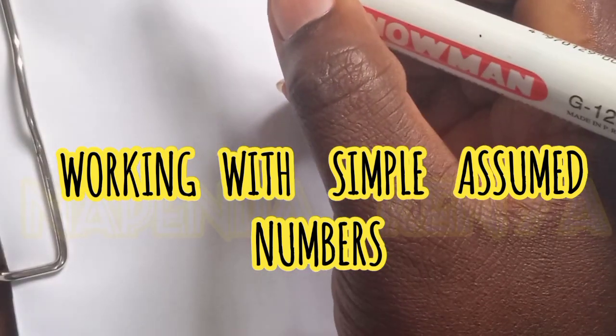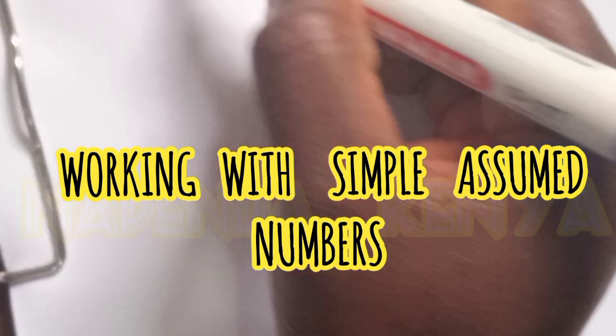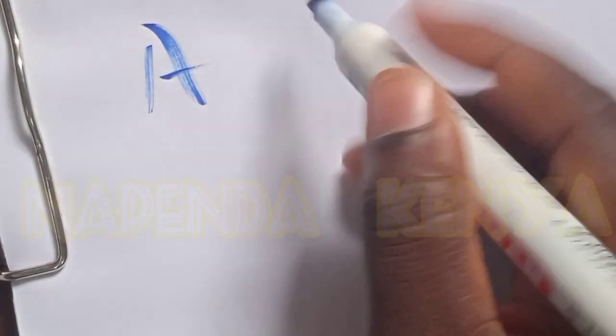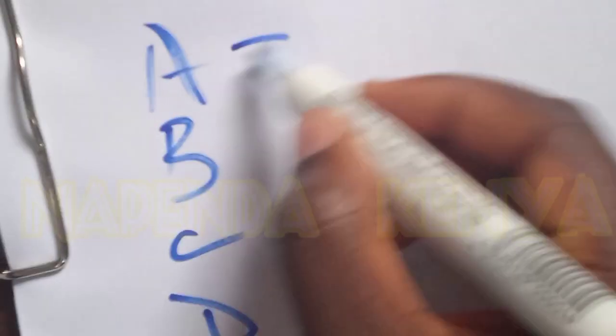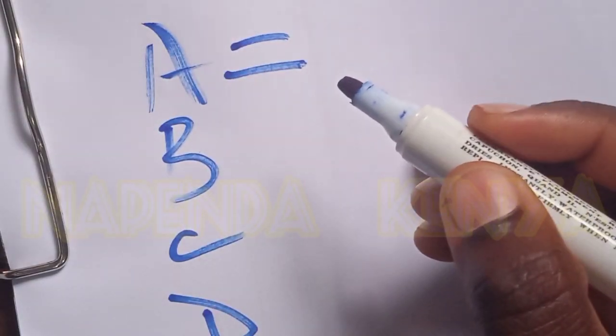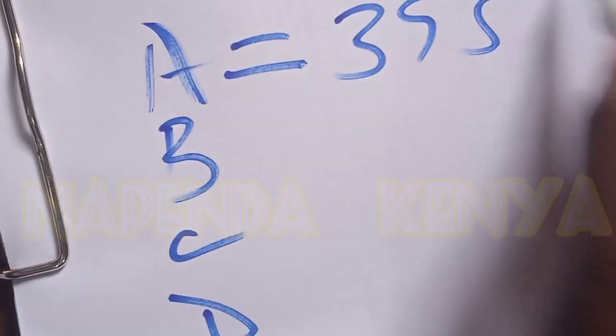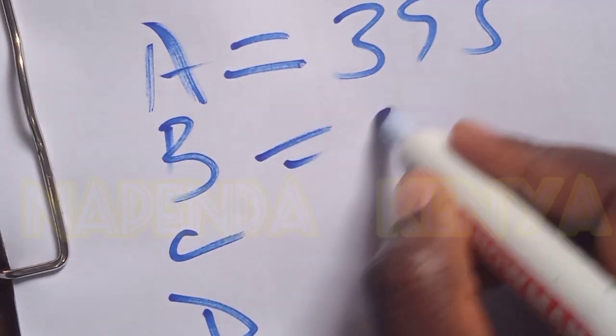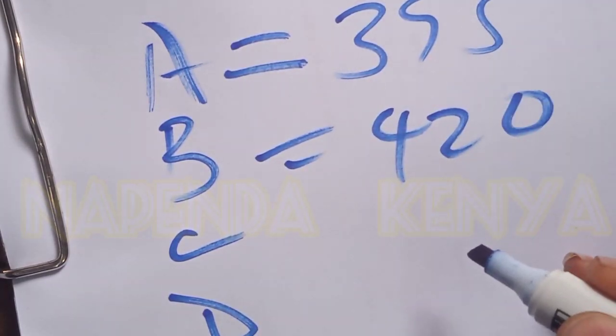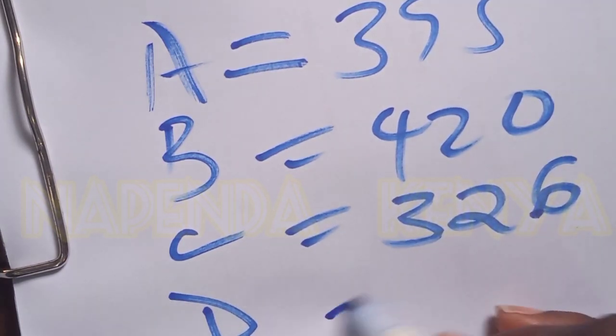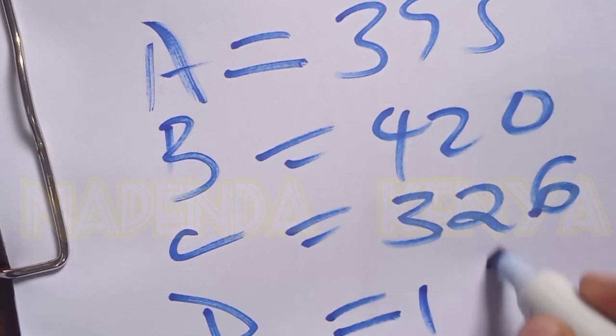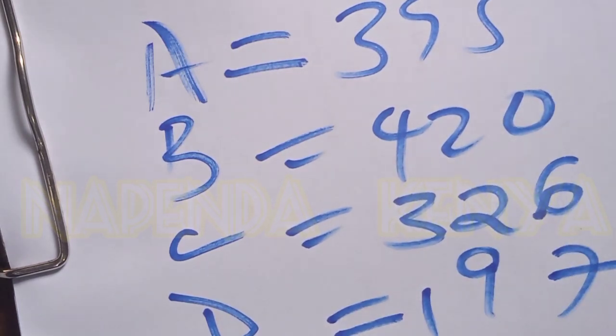So let us do simple mathematics using simple numbers. Let's assume that candidate A, B, C and D. Candidate A scores 395, candidate B scores let's say something like 420, the other one scores 326, and let's assume candidate D scores 197.